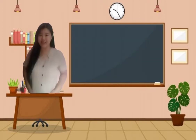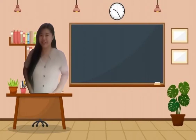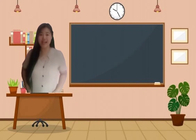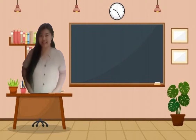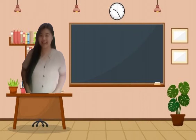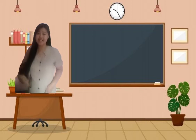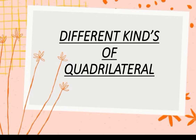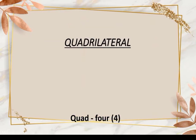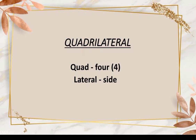Now let us all proceed to our topic for today. Our topic for today is the different kinds of quadrilateral. Who has an idea about quadrilateral? Very good — quadrilateral has four sides. Can you give me shapes that have four sides? Now let us all see if the shapes that you gave me belong to quadrilateral. So, quad means four and lateral means side. That's why quadrilateral is a four-sided figure, or having four straight lines.